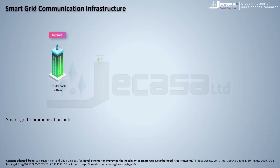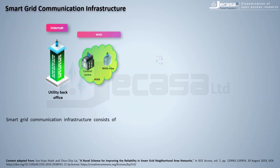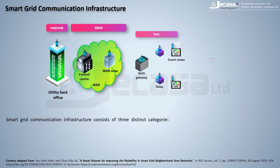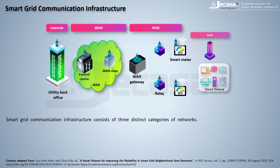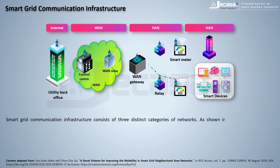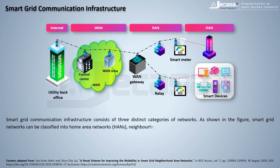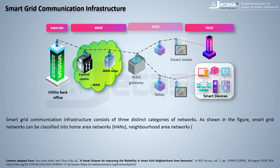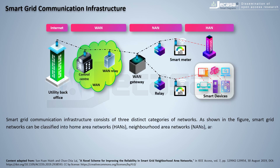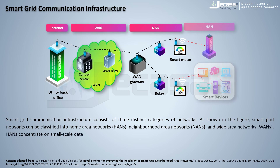Smart grid communication infrastructure consists of three distinct categories of networks, as shown in the figure. Smart grid networks can be classified into Home Area Networks (HANs), Neighborhood Area Networks (NANs), and Wide Area Networks (WANs).